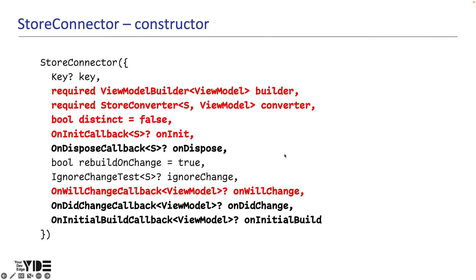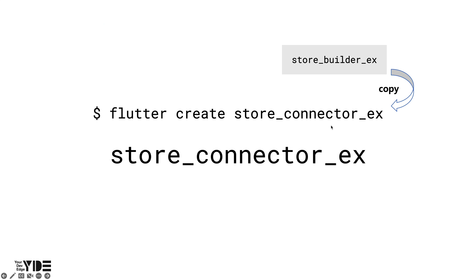When creating an app, let's take a quick look at StoreConnector's constructor arguments. Arguments marked in red are frequently used arguments, and arguments marked in red and bold are the arguments handled in this tutorial. The detailed usage of each argument will be explained while creating the app.